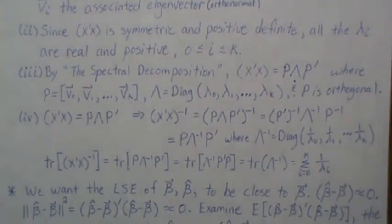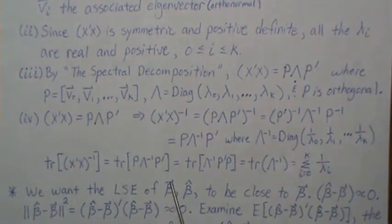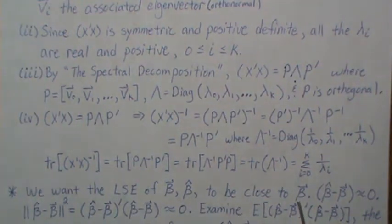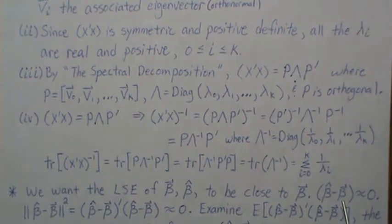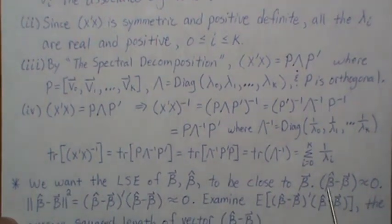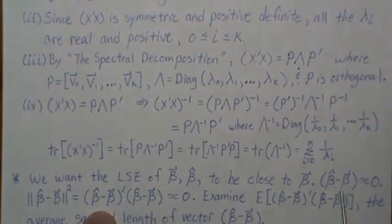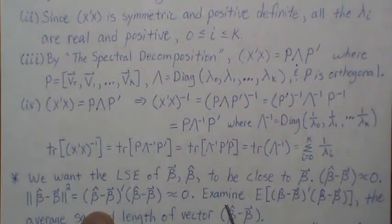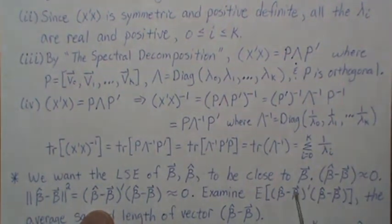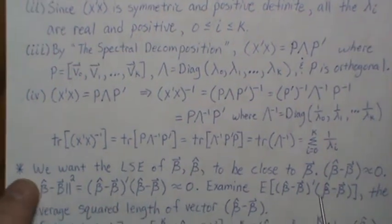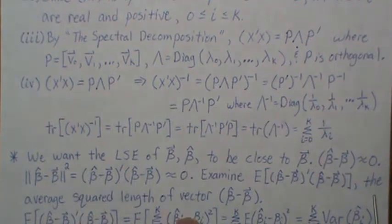We want the least squares estimates β̂ to be as close as possible to the true β. The difference β̂ - β should be close to zero, meaning its squared length should be close to zero. So let's examine the expected value of this squared length — the average squared length of β̂ - β — which we really want close to zero.